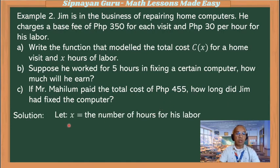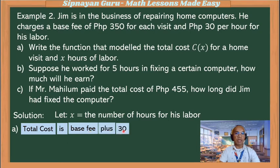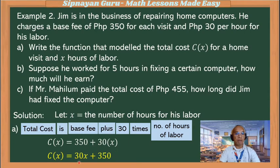For the first question, we let x represent the number of hours of labor. The total cost is obtained by the base fee plus 30, the cost per hour of labor, times the number of hours. So the total cost is c(x) = 350 + 30x. Simplified, this is c(x) = 30x + 350. This function models the condition of the problem.